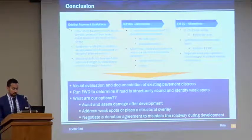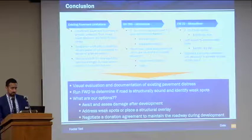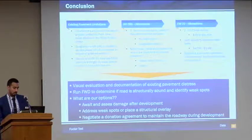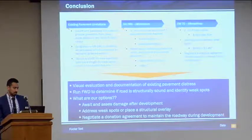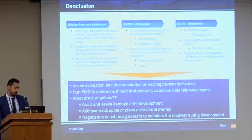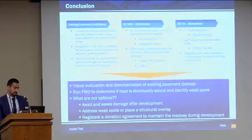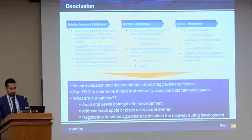Or you can move the loads along the centerline within the limits of the concrete pavement, but you need traffic control and you impact the safety of the traveling public. On FM 70, you can do a two-inch structural overlay — that'll cost $150,000 a mile. You can do spot repairs, ranging from $400,000 to $1.4 million. Or you could negotiate a donation agreement with the developer to address failures as they occur. In summary, we did a visual evaluation, documented existing pavement distress, ran the falling weight deflectometer to determine structural soundness and identify weak spots. Options include waiting and assessing damage later, addressing weak spots, placing a structural overlay, or negotiating a donation agreement to maintain the roadway during development.